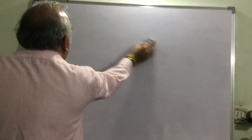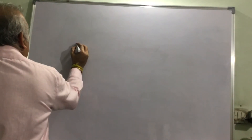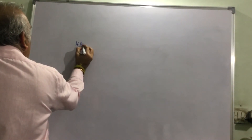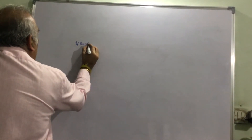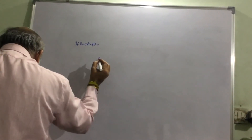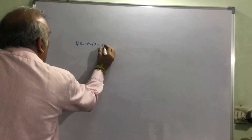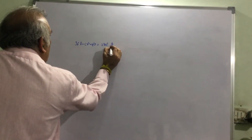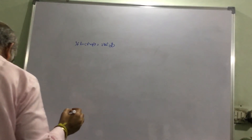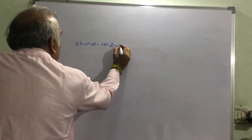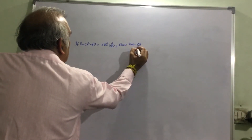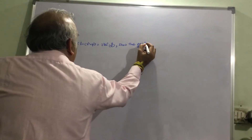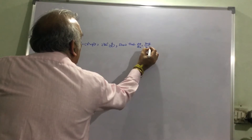Now this problem is: if log(x squared plus y squared) equals tan inverse of y upon x, show that dy upon dx equals (x plus y) divided by (x minus y).